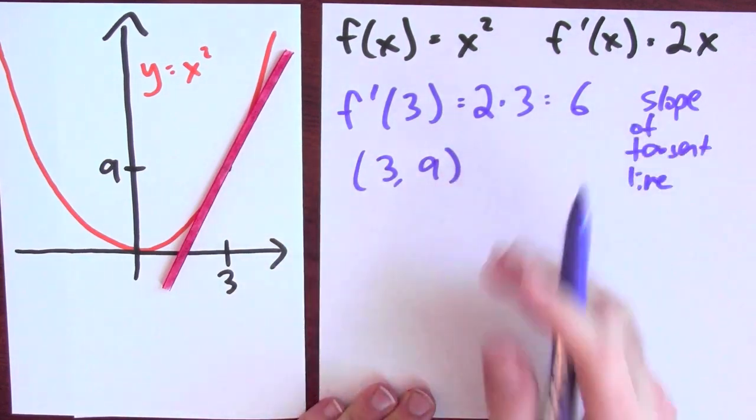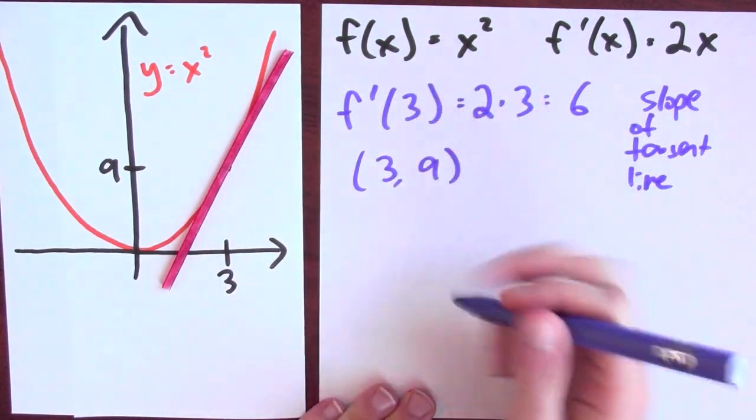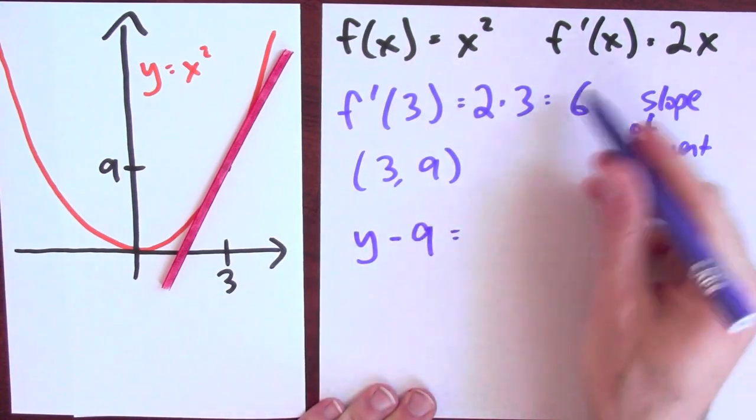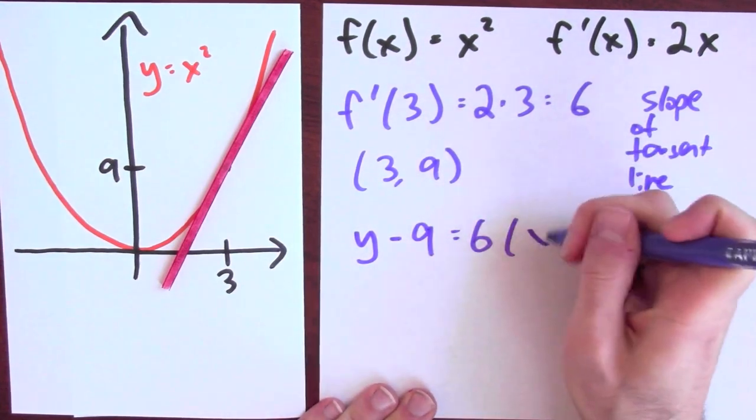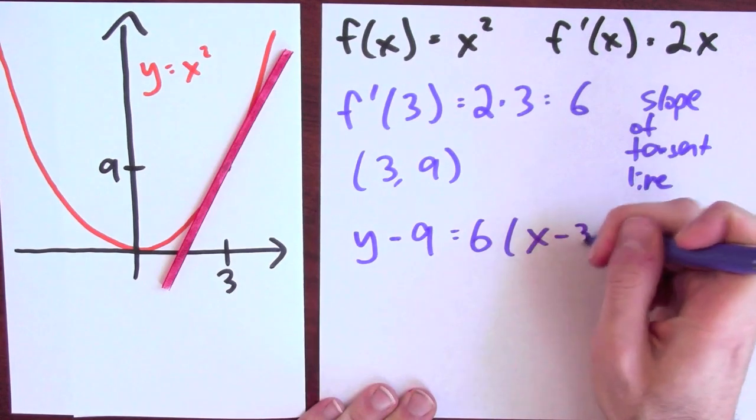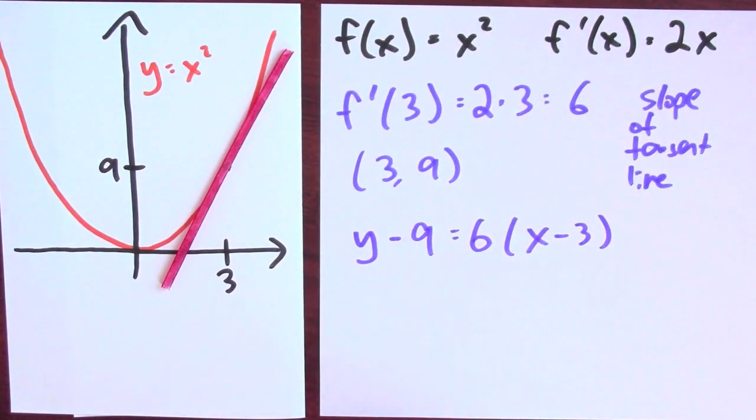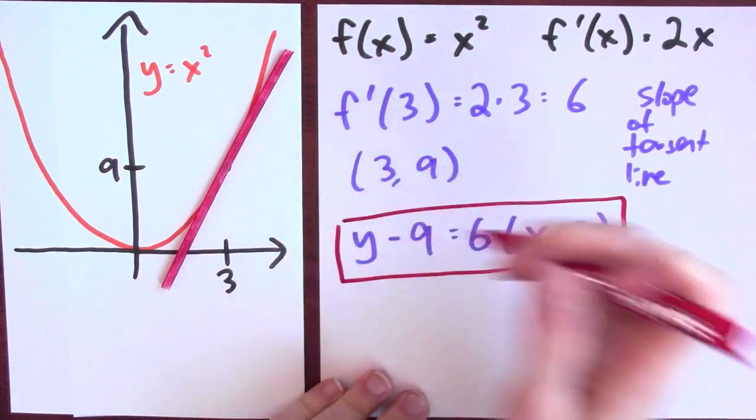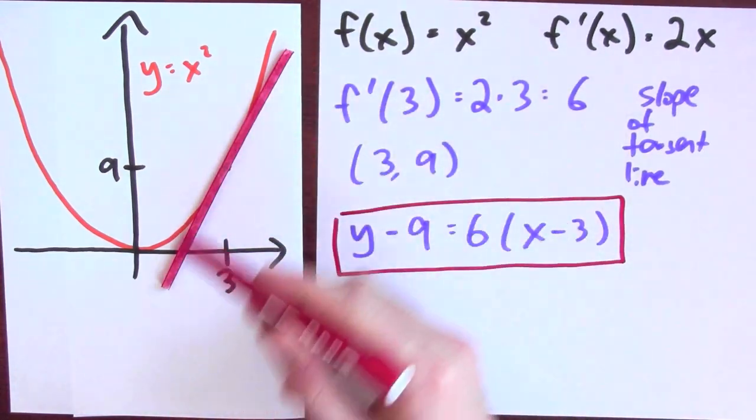I can write down an equation for the line using point-slope form. So y minus the y-coordinate on the line is the slope times x minus the x-coordinate on the line. So this is an equation for this red tangent line.